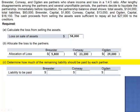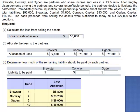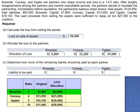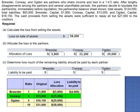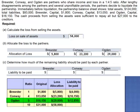Part C asks us to determine how much of the remaining liability should be paid by each partner. The original capital balances were $1,800, $13,050, and $16,150 — total capital of $31,000 before the loss allocation. After the loss is allocated, Brewster's Capital Account will have a debit balance of $4,000, Conway's a debit balance of $10,150, and Ogden a debit balance of $12,850. These debit balances represent each partner's share of the liability. The total liability to be paid is $27,000: $4,000 by Brewster, $10,150 by Conway, and $12,850 by Ogden.